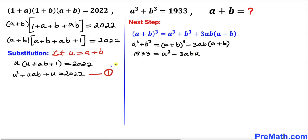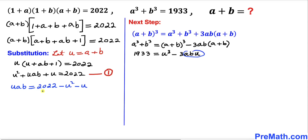Now let's focus on Equation 1. We isolate u·ab by moving all other terms to the right hand side: u·ab = 2022 − u² − u. Now I am going to substitute this into our expression, so 1933 = u³ − 3(2022 − u² − u).